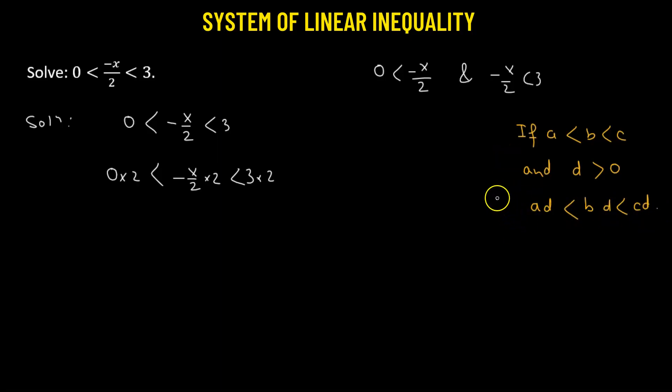There is another property. If our value d is a negative number, then what will happen? If we multiply a with d, b with d, and c with d, the sign will change. So we'll get cd less than bd less than ad. We'll use these two cases.